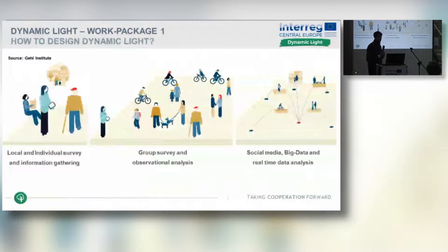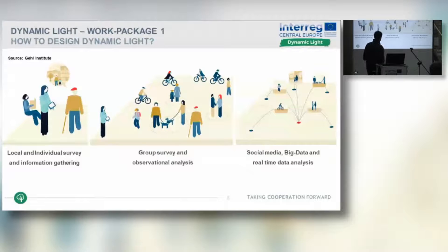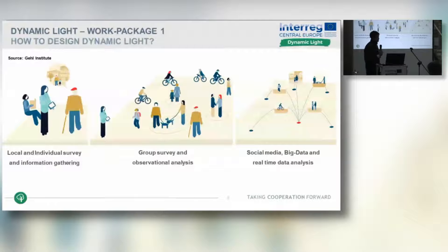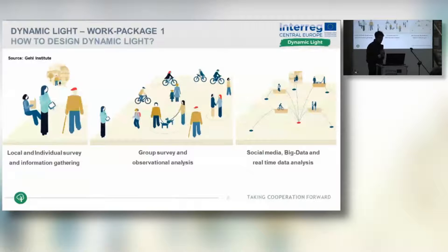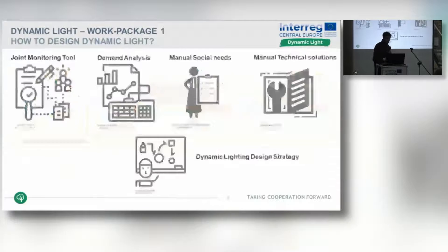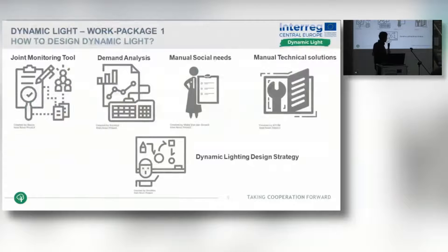We then looked at how we can find out about these demands and needs. Taking inspiration from Jan Gehl, we looked at individual surveys or gathering information at a local level, group surveys, and observation analysis. With new media technology today, we also have social media, big data analysis, and real-time analysis to gather information. We then took all this information and created two main tools: joint monitoring and demand analysis. We are currently also writing up the dynamic lighting design strategies.